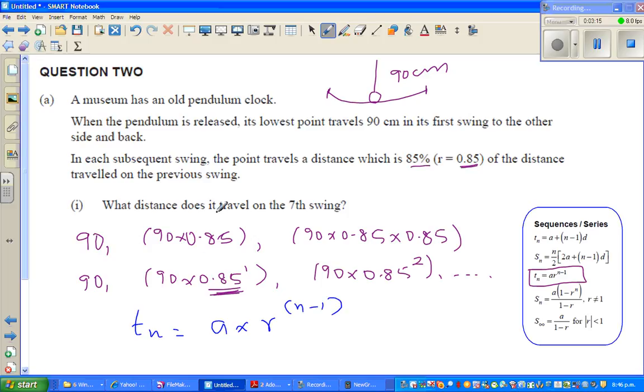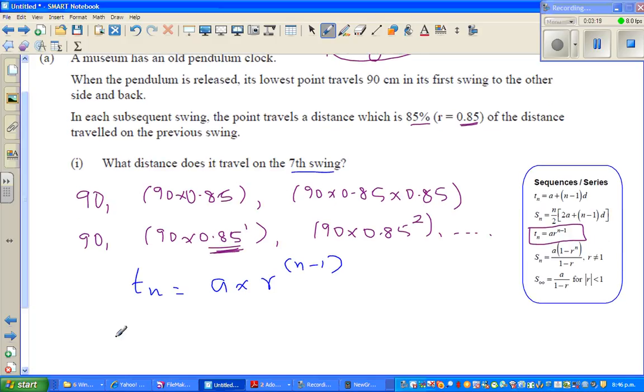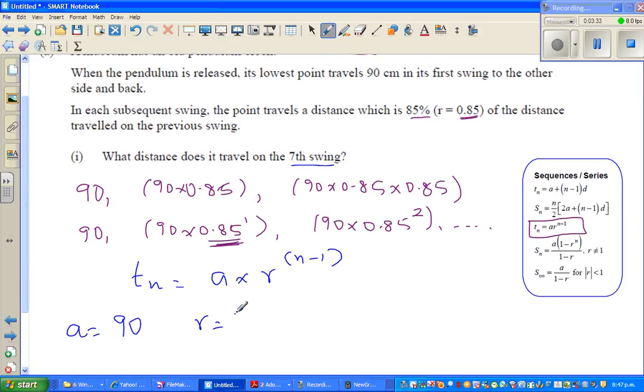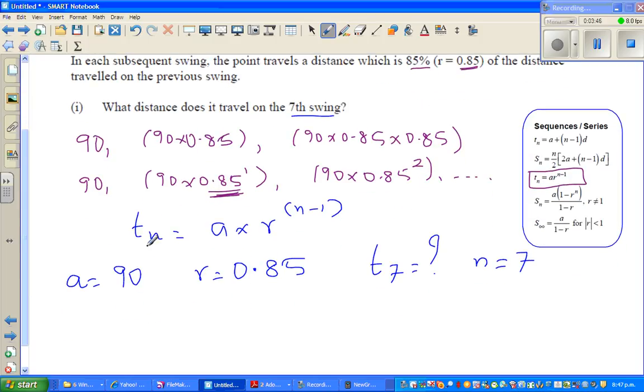The question is, what distance does it travel in the seventh swing? Here, A is your first term, which is 90 centimeters. R is the common ratio, you're multiplying with this ratio, and R is given to be 0.85. You want to find T7, so N is 7. Just substitute the value into this formula.